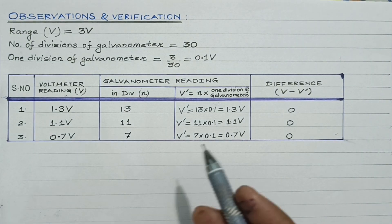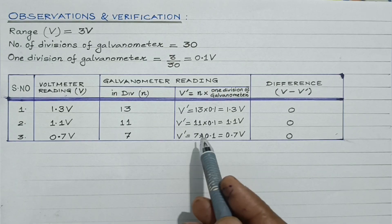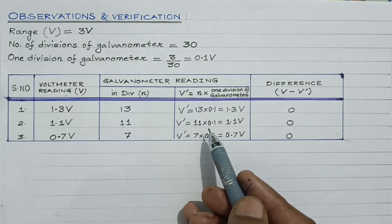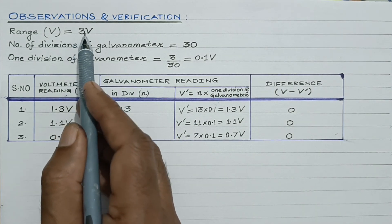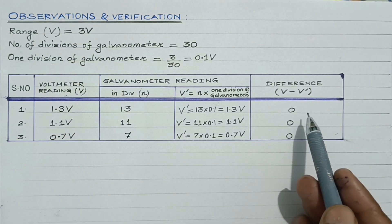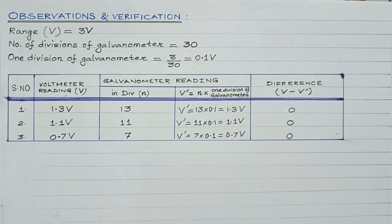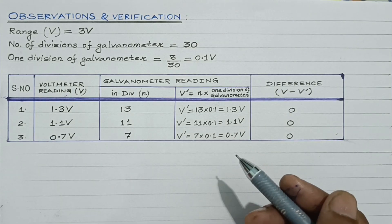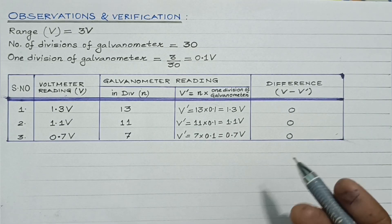We have verified the fact that by connecting in series a very high resistance wire of 4111 ohm, we can convert the galvanometer into a voltmeter of range 0 to 3 volt. Through this observation table it has been verified — the reading in both cases is found to be the same, so the difference is 0. That concludes this experiment. I hope you have understood the experiment and the concepts involved.